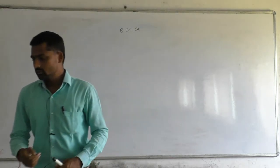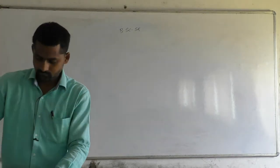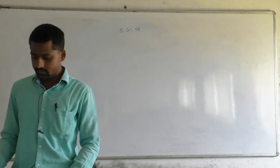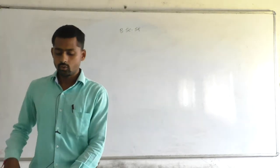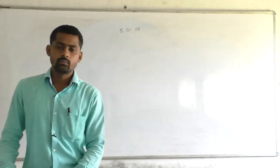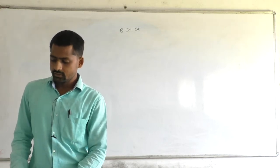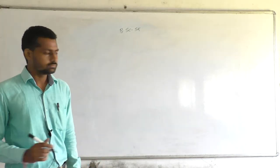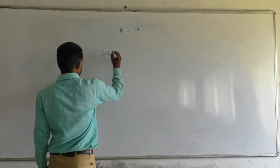Hello students, this is Real Analysis lecture for BSc second year. In the last lectures we discussed what is meant by Dedekind's axiom, representation of a real number on a straight line, neighborhood of a point, deleted neighborhood, and some illustrations. In today's lecture I am going to give you some examples.